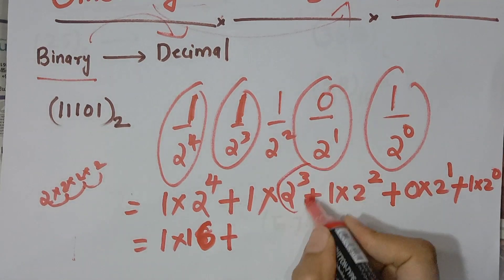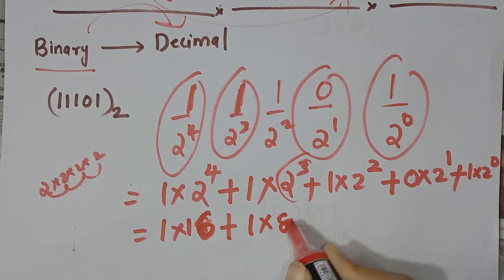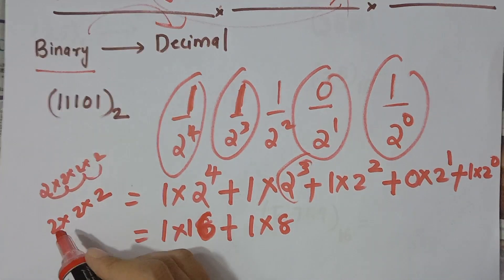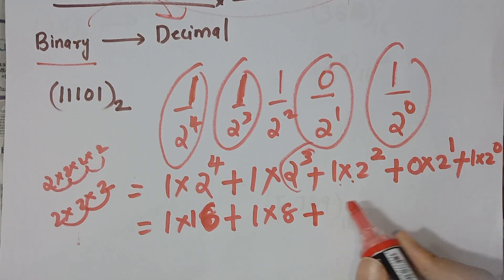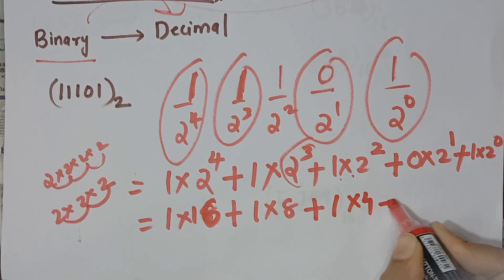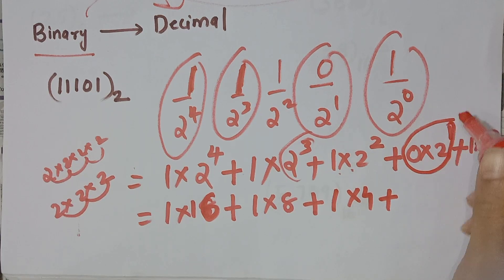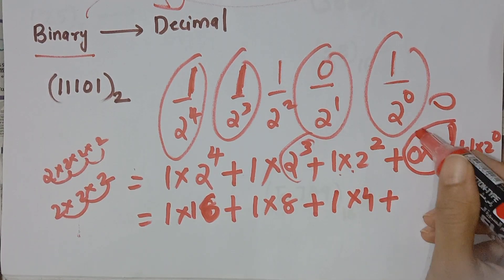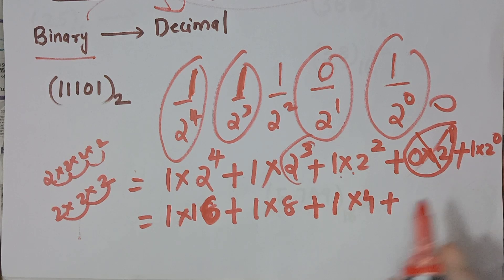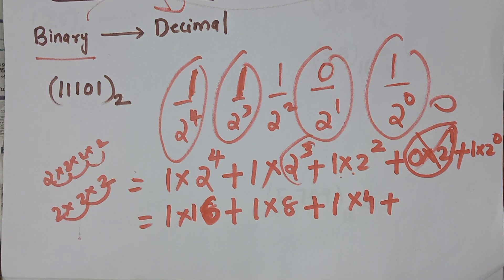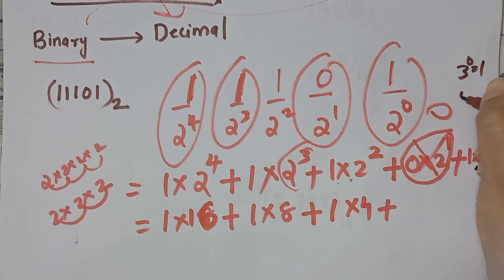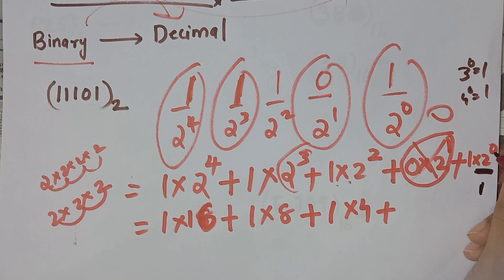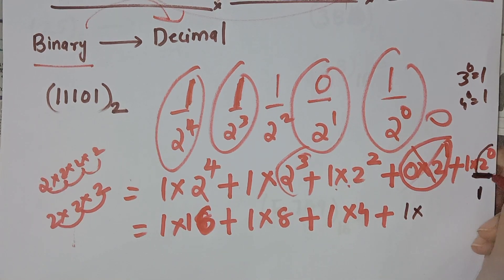2 raised to 3 is 8. 2 raised to 2 is 4. 2 raised to 4 is 16. The term with 0 gives zero — that position is 0. We also have 1 into 2 raised to 0. Any number raised to the power 0 is 1. So 2 raised to 0 is 1, 3 raised to 0 is 1, 4 raised to 0 is 1.